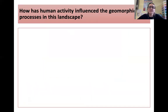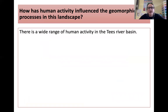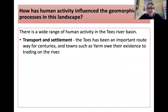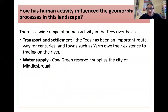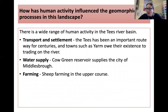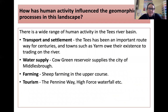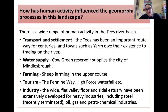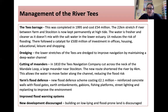So how has human activity influenced the geomorphic processes in this landscape? It's got a lot going on. Transport and settlement has been an important routeway for centuries — towns like Yarm owe their existence to trading on the river. Cow Green Reservoir supplies the city of Middlesbrough with its water supply. There's sheep farming in the upper course near the Pennines at Crossfell, and lots of tourism including the Pennine Way and High Force Waterfall. The wide flat valley floor and the tidal estuary have been extensively developed for heavy industries, including steel, oil, gas, and petrochemical industries.